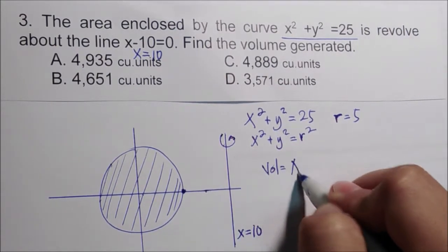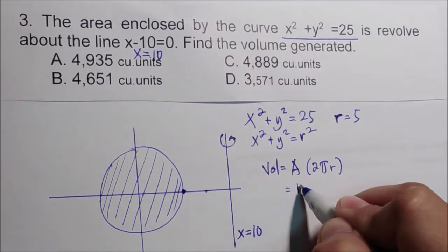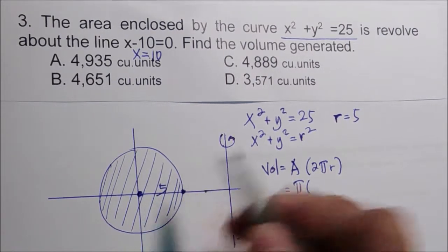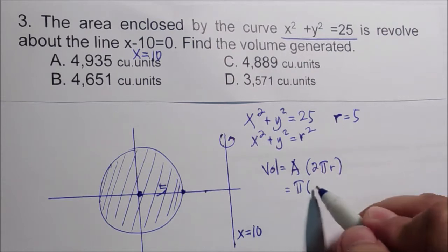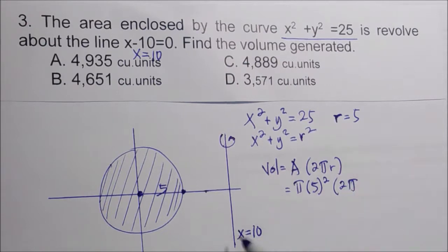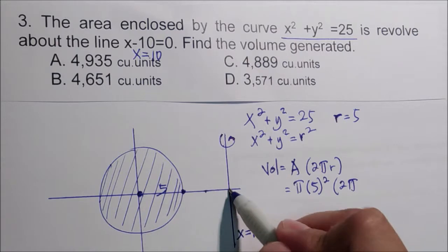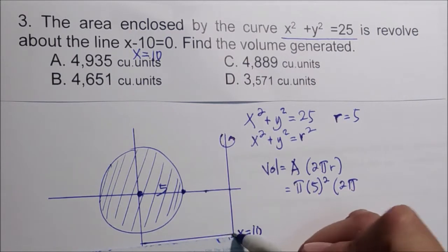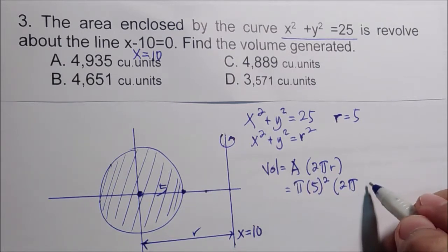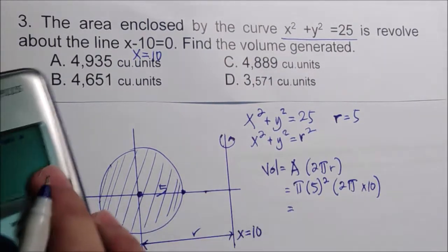The volume equals the area of the circle multiplied by 2πr. The area of the circle is πr² = π times 5² = 25π. The radius r in the Pappus formula is the distance from the centroid of the circle to the line of rotation. The centroid of the circle is at the origin (0, 0), so the distance to x = 10 is 10. Volume = 25π times 2π times 10.